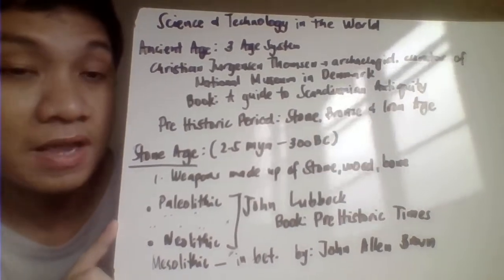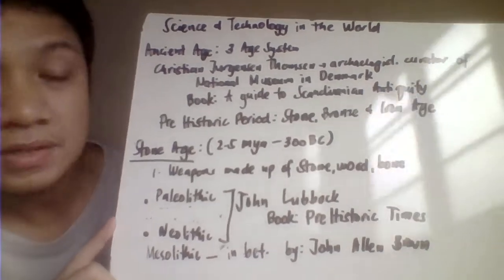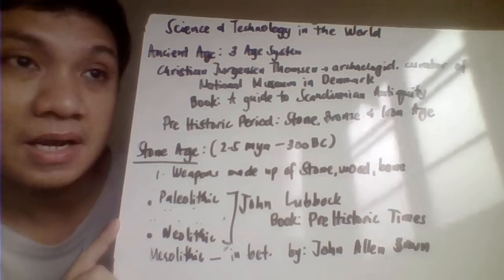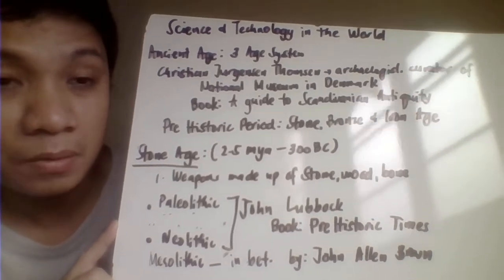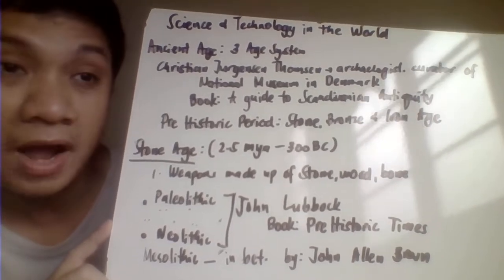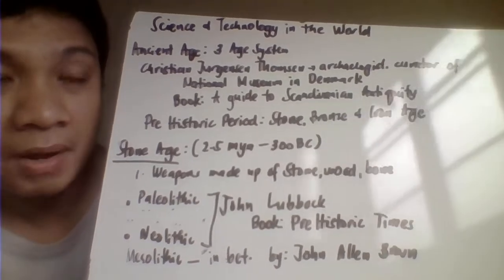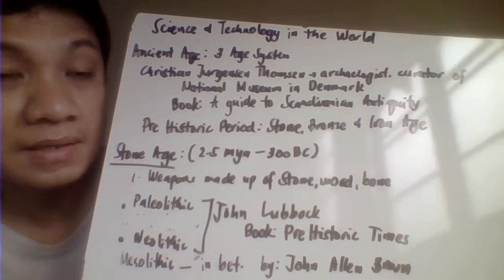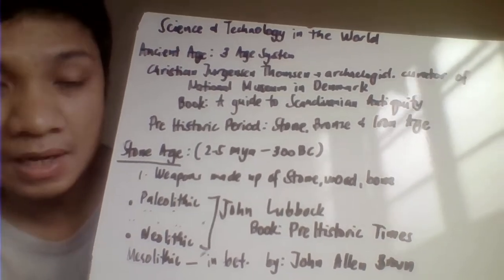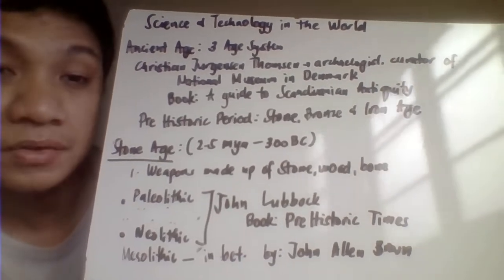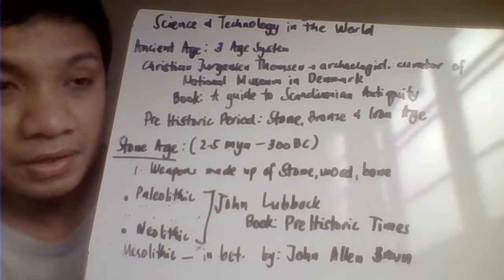The ancient time is divided into three stages or prehistoric periods. This division was made by Christian Jürgensen Thomsen, a curator and archaeologist who worked on the national museum in Denmark. Through his book 'The Guide to Scandinavian Antiquity,' he tried to divide prehistoric time into three ages based on the materials exhibited in that museum. The ancient time is divided into three: the Stone Age, the Bronze Age, and the Iron Age.